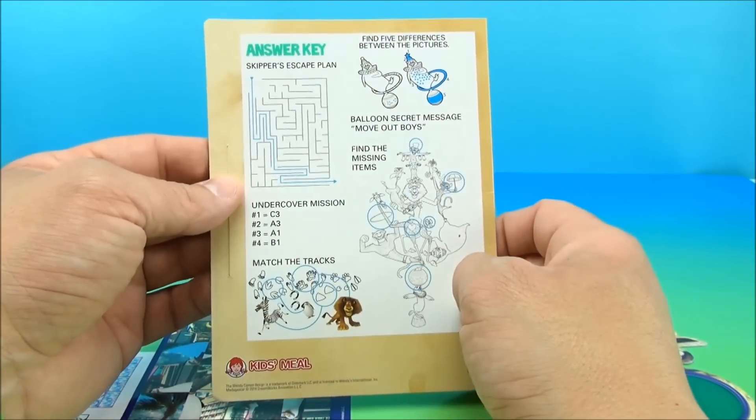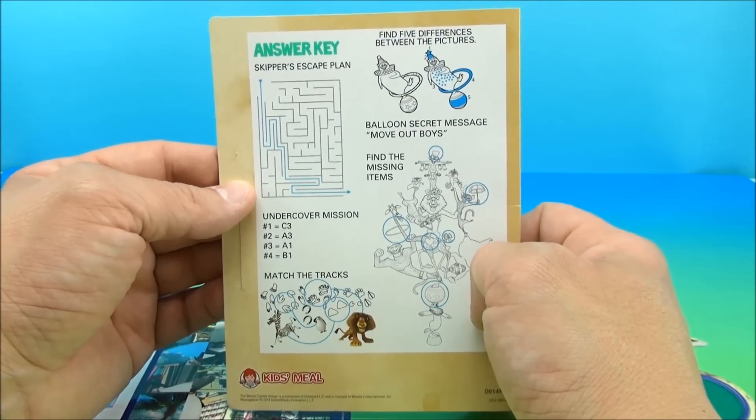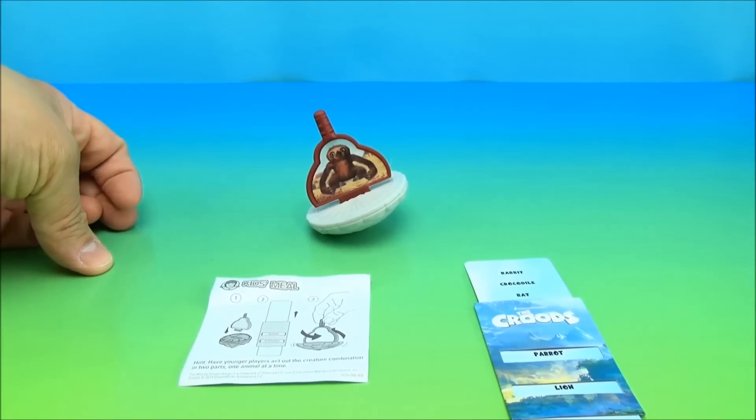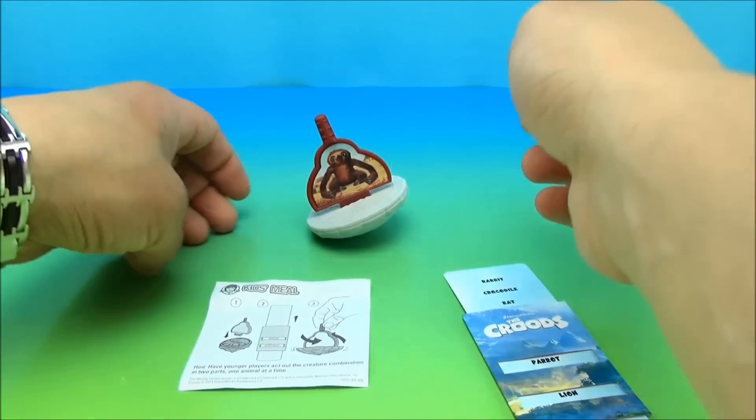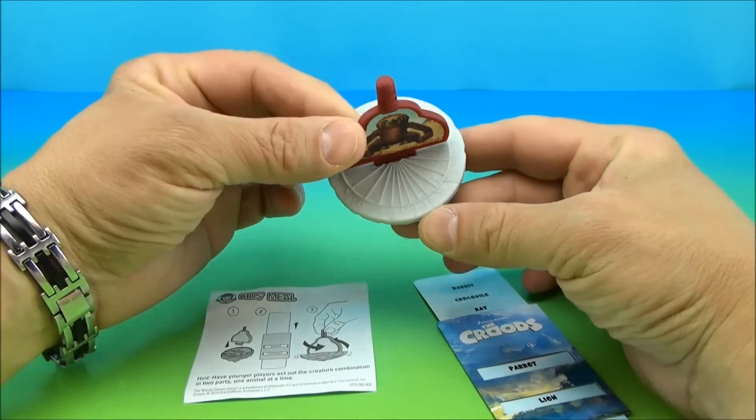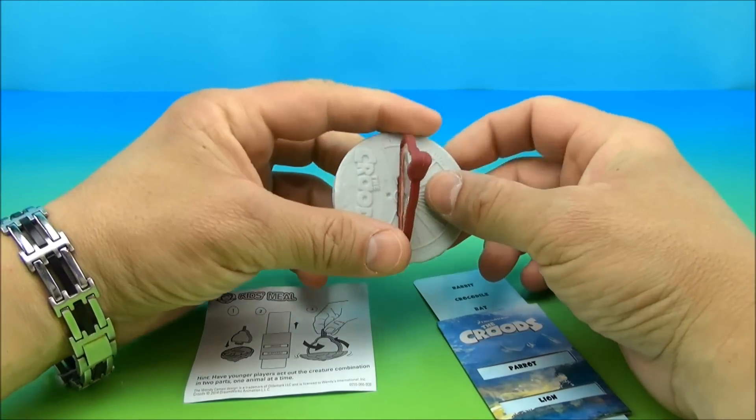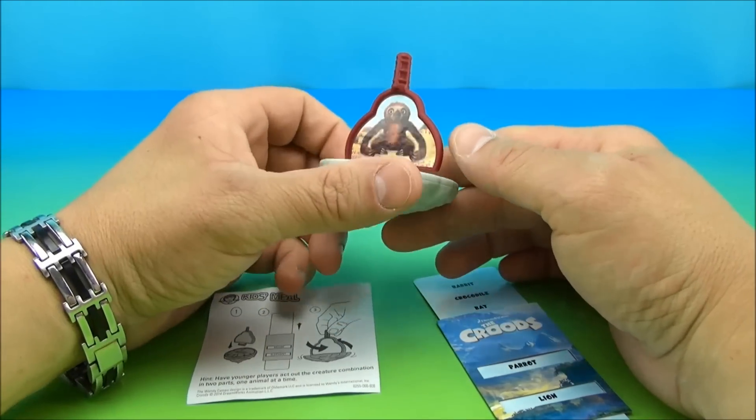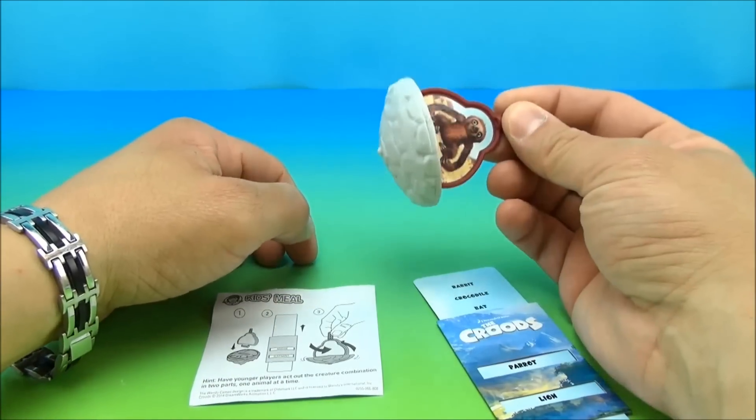So don't look at this spoiler page. Sorry, spoiler alert. I ruined it. Next we have Belt's Silly Charades. I've got all kinds of stuff rolling around the table right here. This is actually a timer. So there's a little rock here and it looks like a little sundial almost. This is from the Croods.